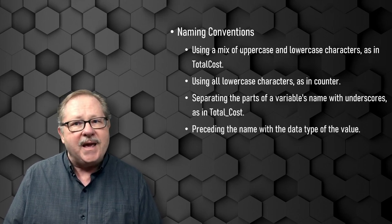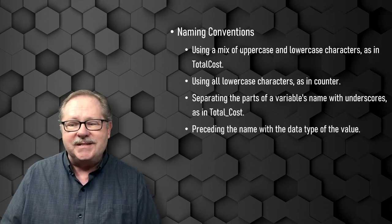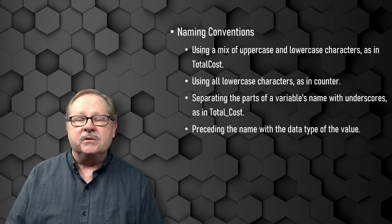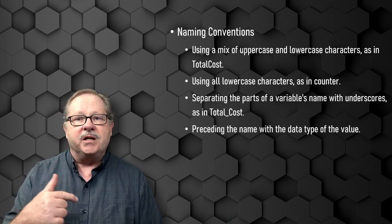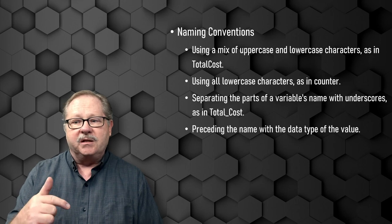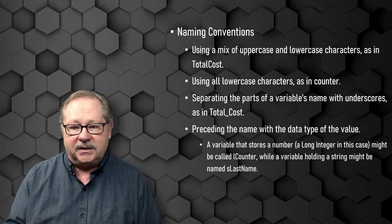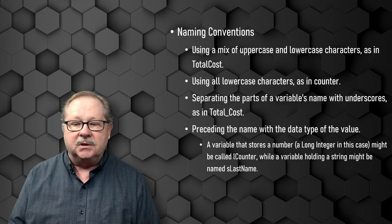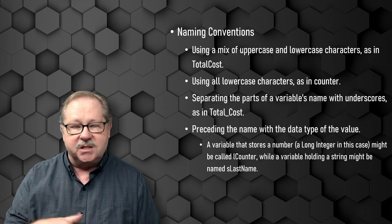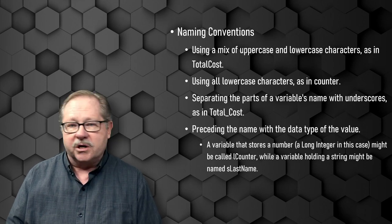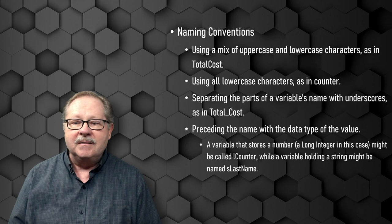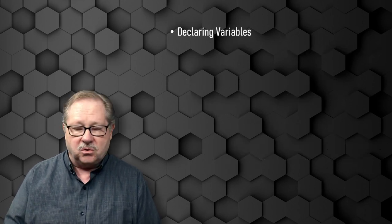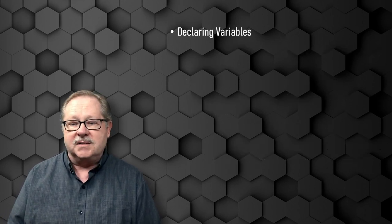And then there's preceding the name with the data type of that value. In other words, if I'm going to dimension it as a Long variable, I would put the letter L in front of it, so it would be lTotalCost. Or if it was a Double, it would be dTotalCost. Or C, if it was currency, it would be cTotalCost — that type of thing.